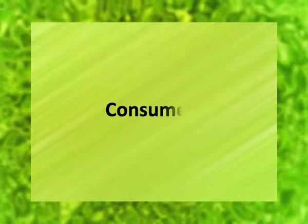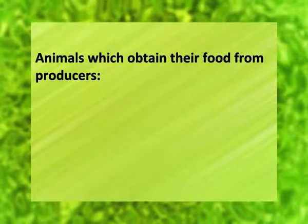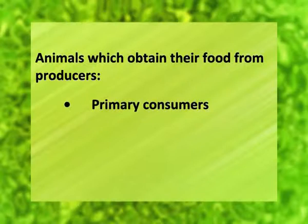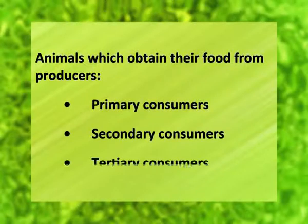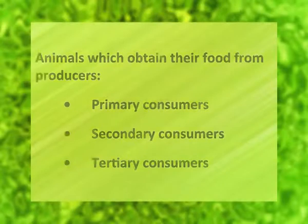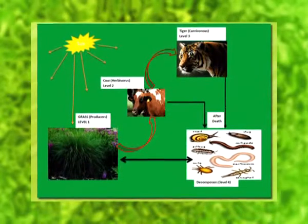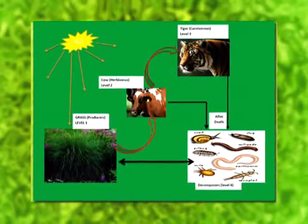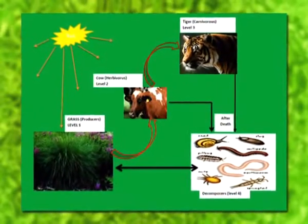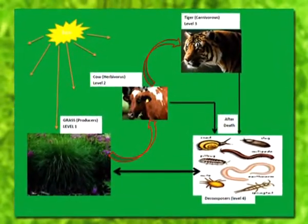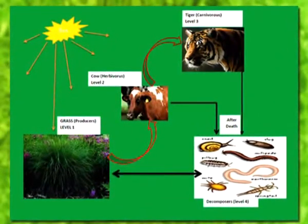Consumers are those animals which obtain their food from producers. These are primary consumers, secondary consumers, and tertiary consumers. Herbivores are the category of organisms which feed on plants, also called primary consumers. For example, cow, goat, rabbit, etc. These organisms mainly depend on herbs, plants, grasses, etc., so they are called herbivores.